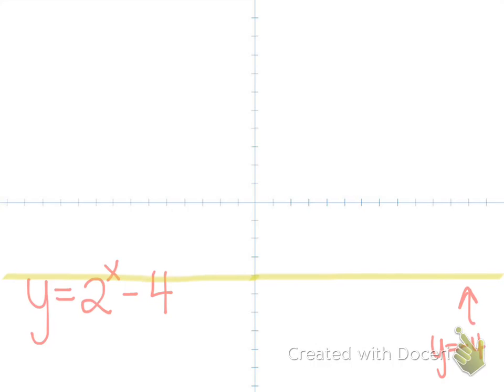Get rid of our old asymptote and now we have our new one. When you plot points, you're going to find that the graph will look like this. It's growth because 2 is greater than 1, and it gets really close to but doesn't touch this horizontal asymptote.